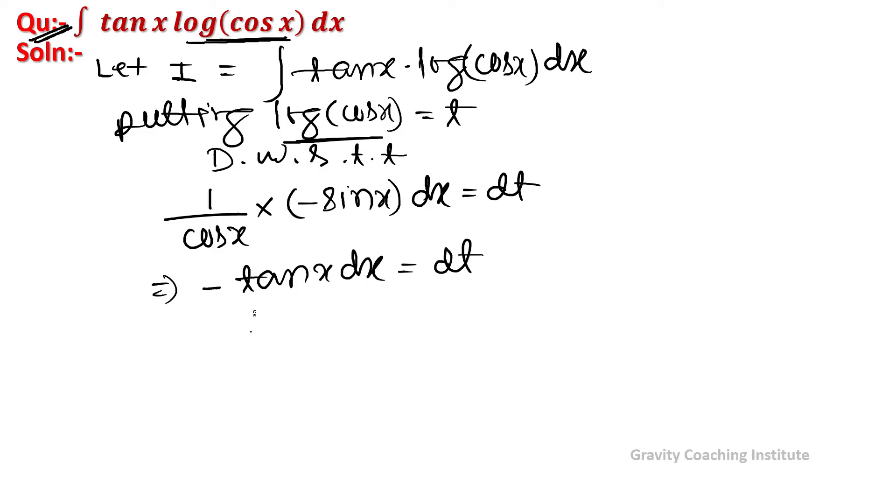Therefore tan x dx equals minus dt. So I equals the integration of t times minus dt. Using the power rule, this gives minus t squared over 2 plus C, which is minus 1/2 times t squared. Now we substitute back t equals log(cos x).